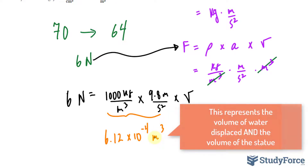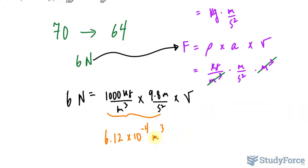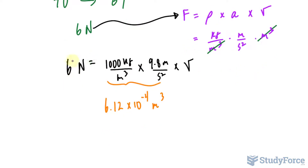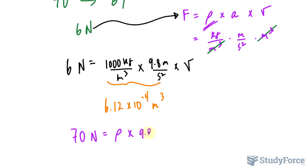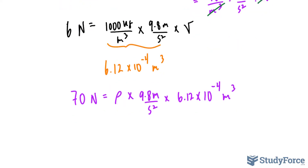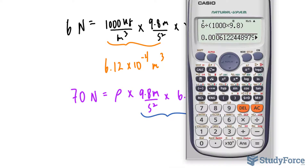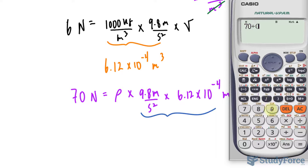This was the volume displaced after the statue was placed into the water. Now we set up another equation: force equals 70 newtons — the weight of the object outside of water — and we keep the density as an unknown variable, which we'll compare to the actual density of gold. So: 70 = ρ × 9.8 m/s² × 6.12 × 10⁻⁴ m³. We multiply the two known factors and divide 70 by that result.